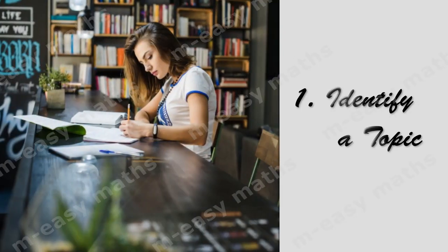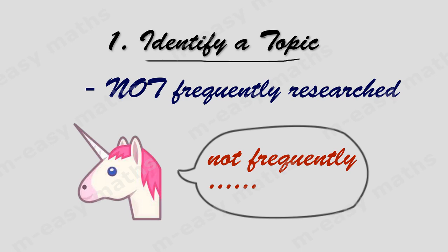Step 1 is identifying a topic. From my experience, when you go for identifying a topic, go for an area which is not frequently researched. When you go for a frequently researched topic, your research might get outdated. So go for a topic which is not frequently researched to be on the safer side.